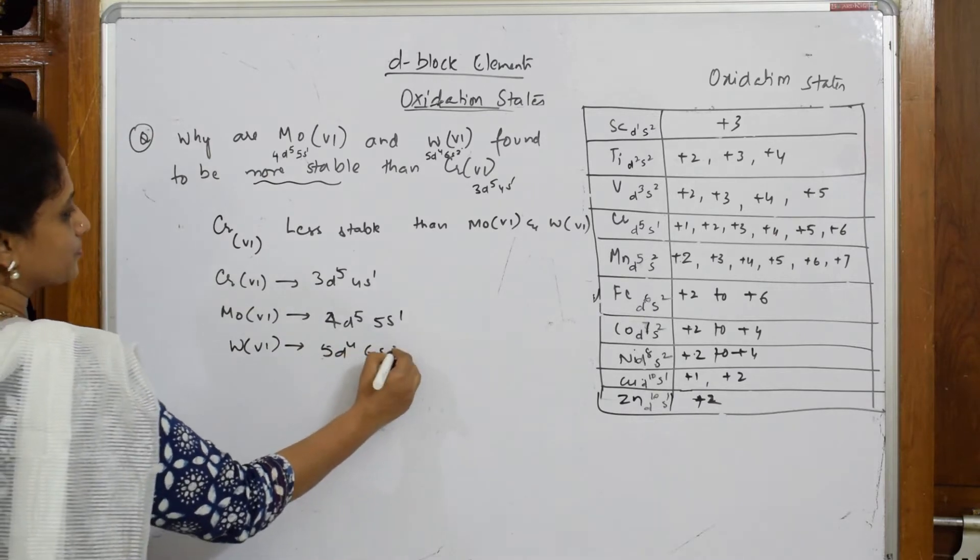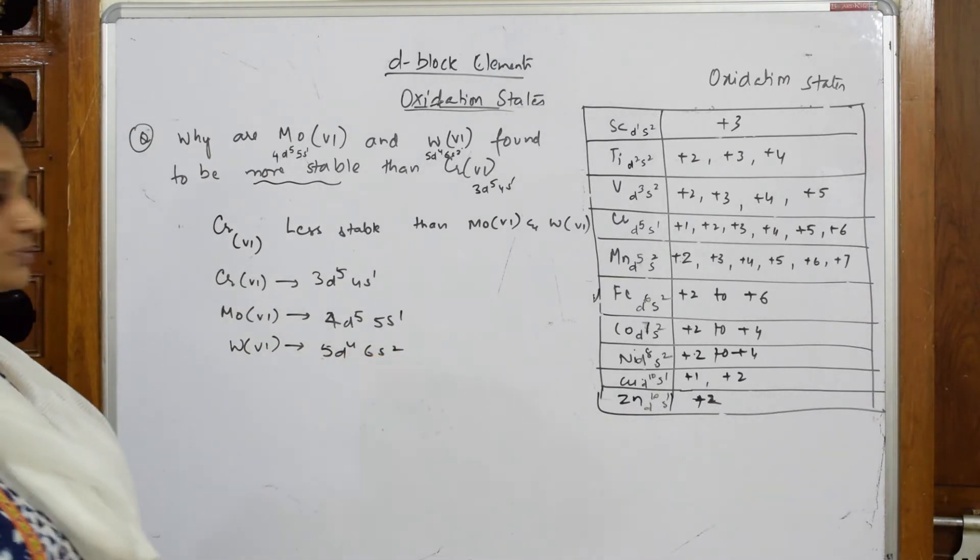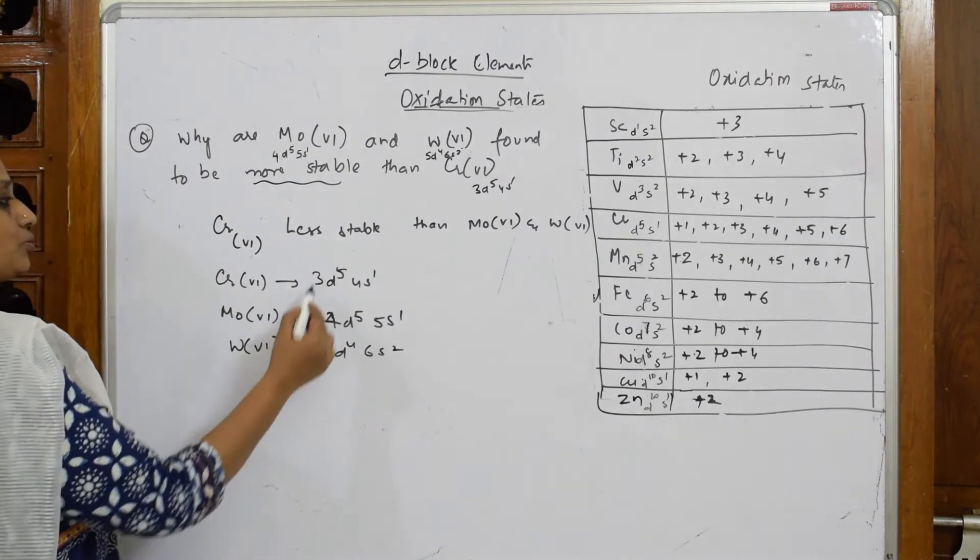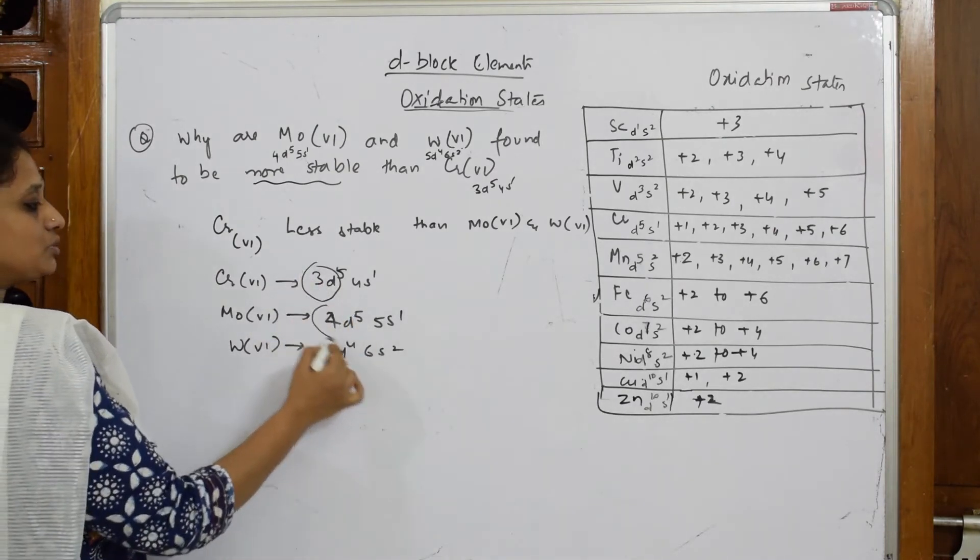5d4 6s2. Now what is the difference between these three? For chromium you have 3d, for molybdenum you have 4d, and for tungsten 5d. Now I'm going to speak in terms of radial nodes. Basically, whenever we are speaking